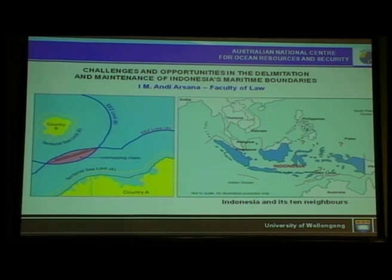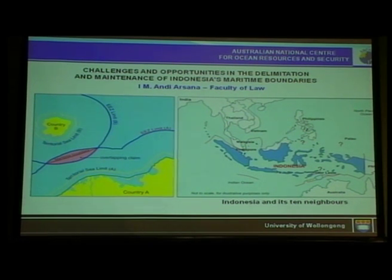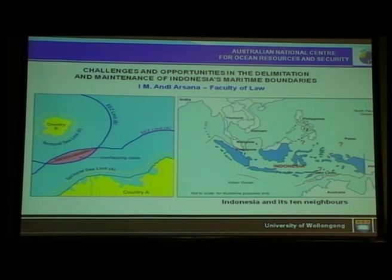For example, if there is a small country like a tiny dot in the ocean, with no other countries around, this small country can claim a very large maritime area — as large as one million times of its land size. Amazing, isn't it?